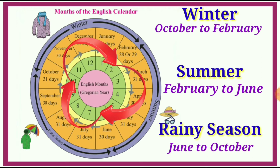Next, summer season February से start होता है. February to June — February, March, April, May, June. गर्मी रहती है.